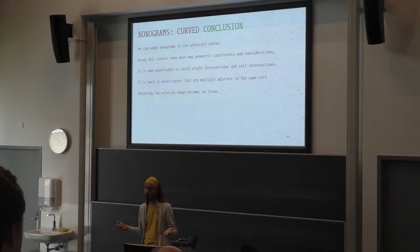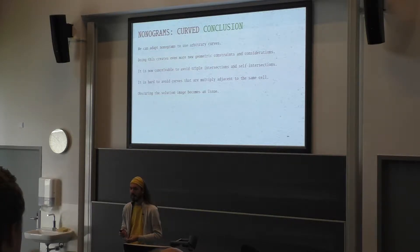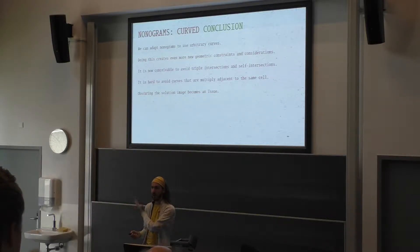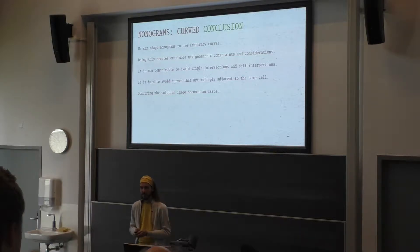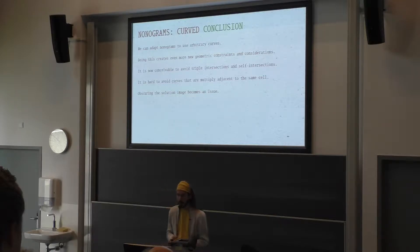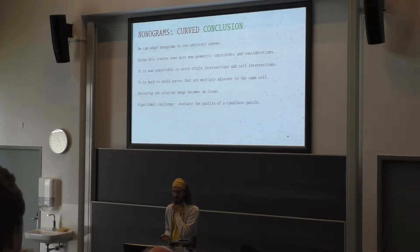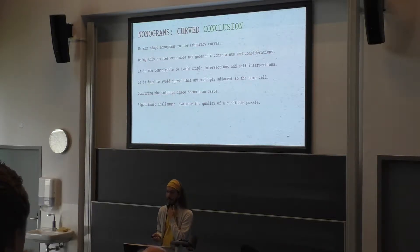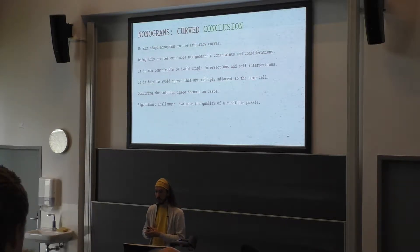The question of how to obscure the image — I think that's wide open. How do you even measure whether the output image is visible in a set of curves? It's a very psychological question, almost. And there is some algorithmic challenge in evaluating the quality of a candidate puzzle, as well as in generating more restricted curve arrangements.